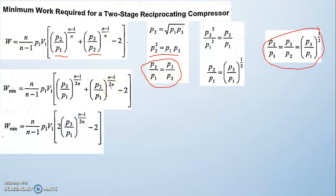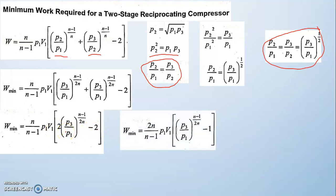This is the equation for minimum work done for a two-stage reciprocating compressor: W_min = 2 · n/(n−1) · p1·v1 · [(p3/p1)^((n−1)/(2n)) − 1]. The factor p3/p1 is the common term. For a three-stage compressor, the 2 is replaced by 3, giving 3 · n/(n−1) · p1·v1 · [(p4/p1)^((n−1)/(3n)) − 1].